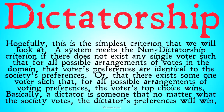Hopefully this is the simplest criterion we will look at. A system meets the non-dictatorship criterion if there does not exist any single voter such that for all possible arrangements of votes in the domain, that voter's preferences are identical to the society's preferences. There's not one voter that, no matter what anyone else votes, whatever that voter says goes.